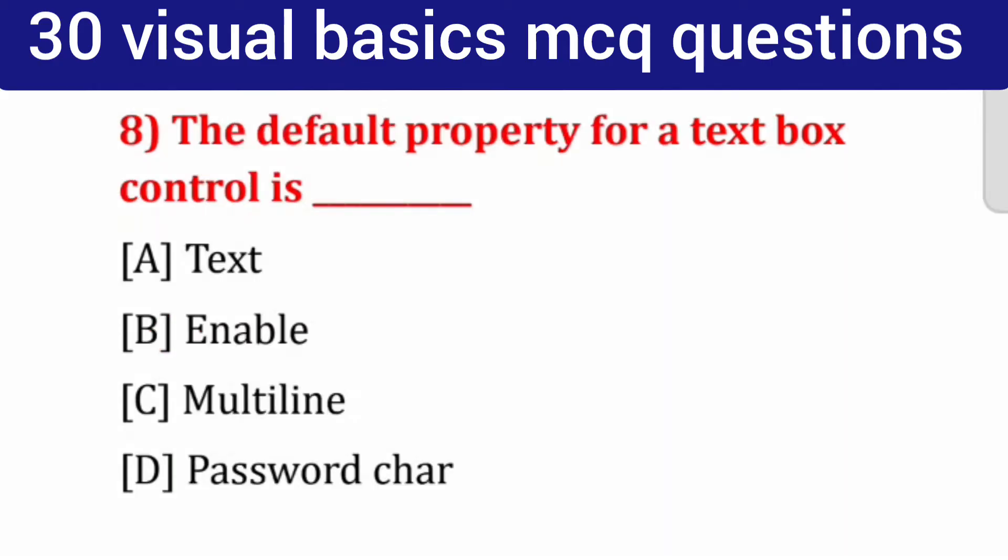Question number 8: The default property for a text box control is ___. Options: text, enable, multiline, password char. Correct answer: text.